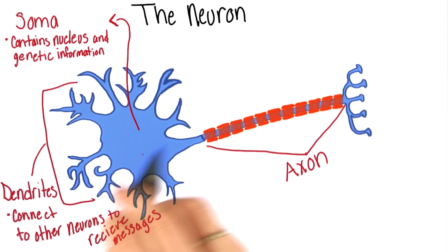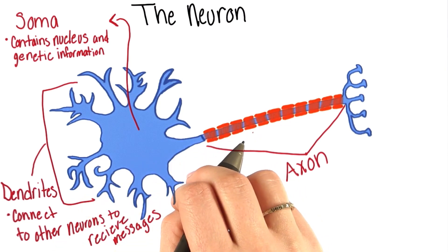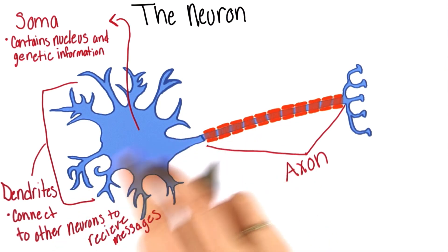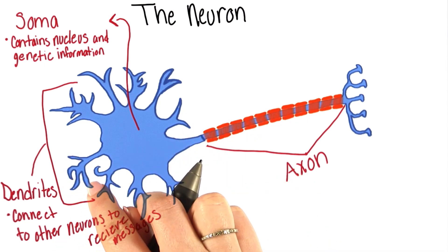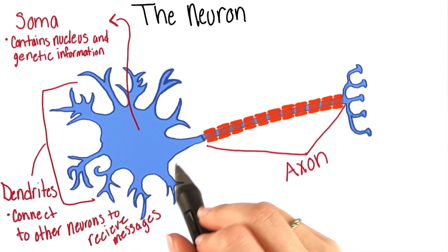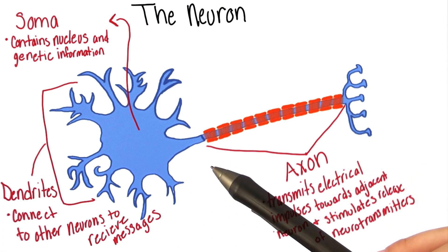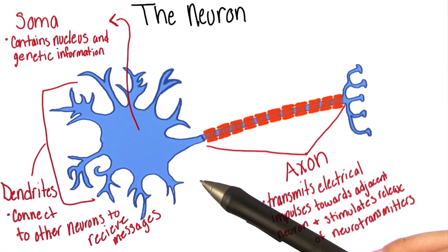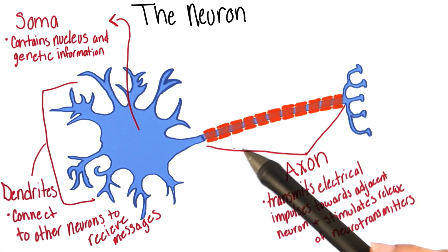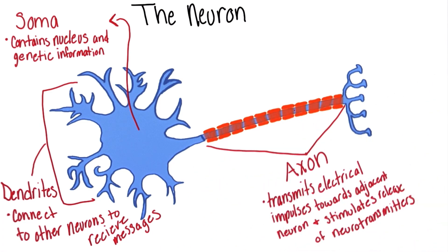Extending out from the soma on the opposite side of the dendrites is the axon. The axon transmits electrical impulses towards adjacent neurons and stimulates the release of what we call neurotransmitters. We'll get to those in a second.